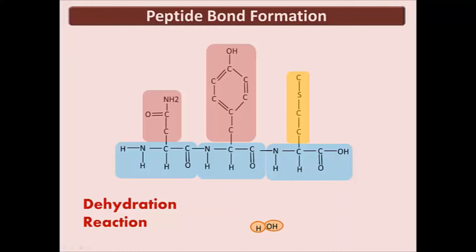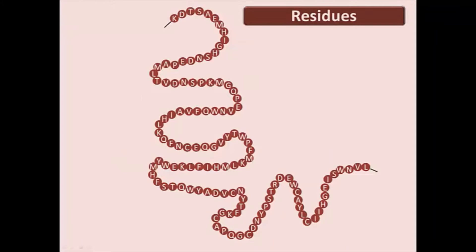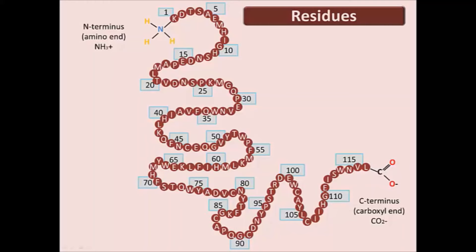Specific polypeptides have particular linear arrangements of amino acids. These linear backbone chains have two ends: one with a free amino group and the other with a free carboxyl group. The amino end is the head of the chain, known as the N-terminus. The carboxyl end is the tail, known as the C-terminus. An amino acid incorporated into a polypeptide chain is referred to as a residue, numbered sequentially beginning with the N-terminus. This particular residue would be 117 amino acids long.